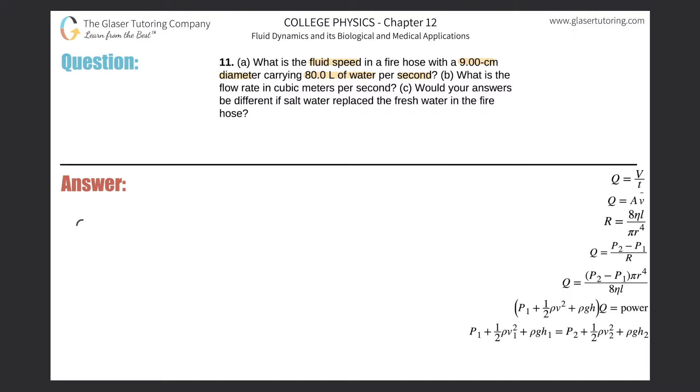Okay, so for letter A, we're asked to find the speed, right? We know speed is velocity. So we want velocity in meters per second. Now, given the information, we have the diameter, diameter of this hose.